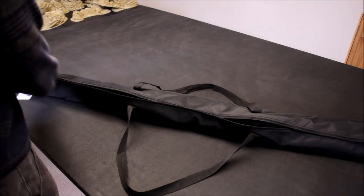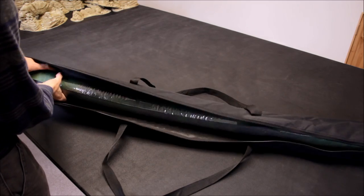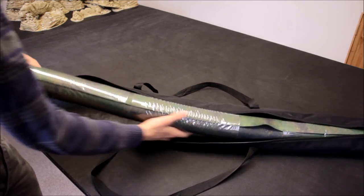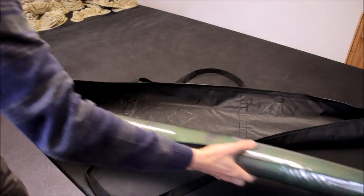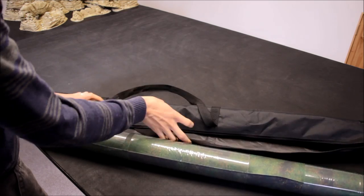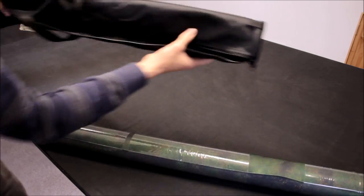With the mat, so I haven't even rolled this out yet. This is how it comes in the cardboard box for postage, but then this is the mat here. This is a 6x4, so perfect for your games of Warhammer 40,000.